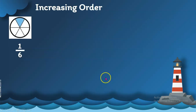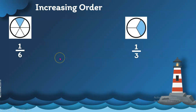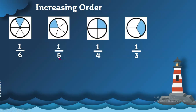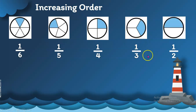Now, in increasing order, we have here one-sixth, then one-fifth, one-fourth, one-third, and then of course one-half.